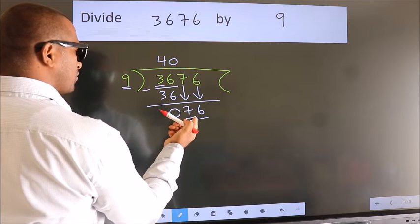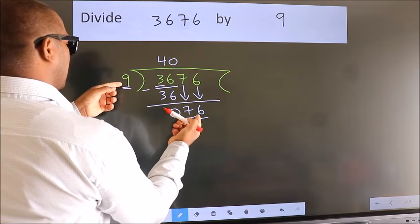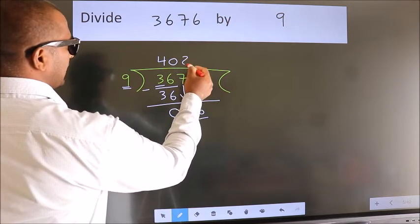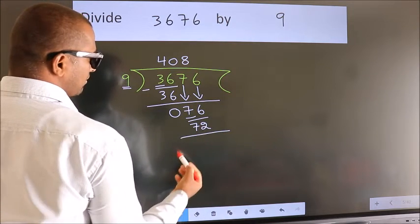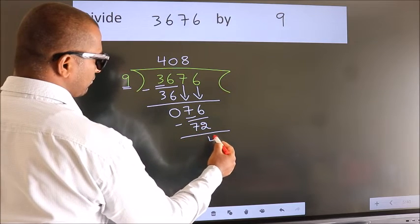A number close to 76 in 9 table is 9 times 8 is 72. Now, we subtract. We get 4.